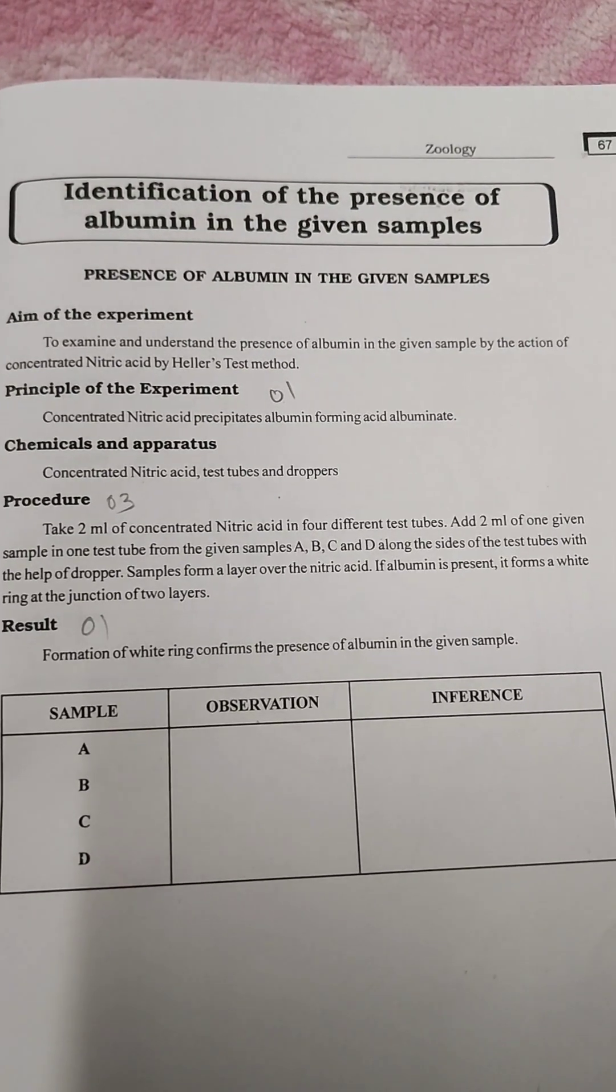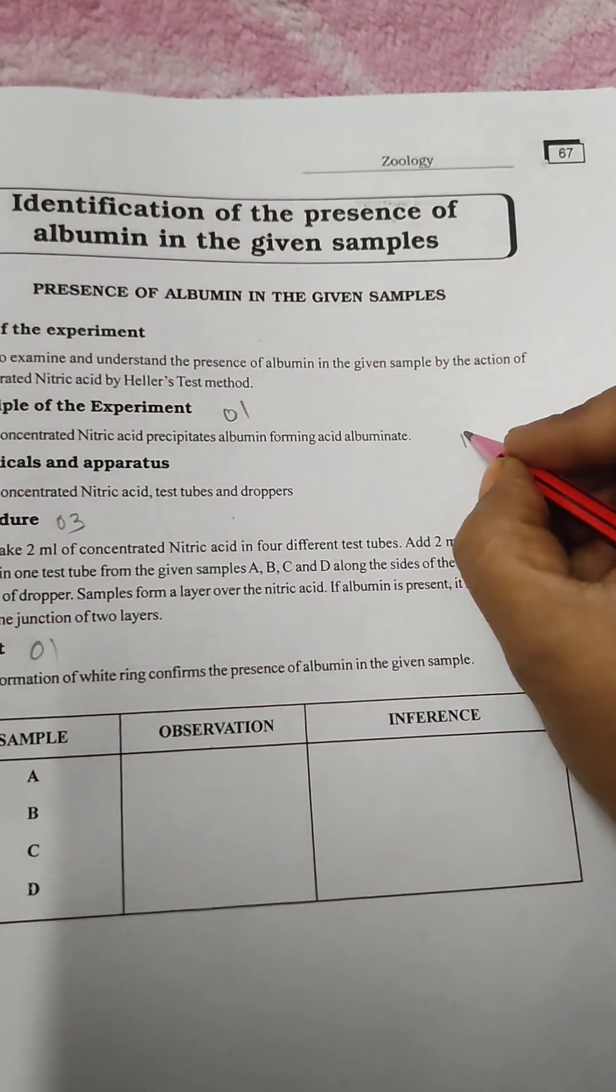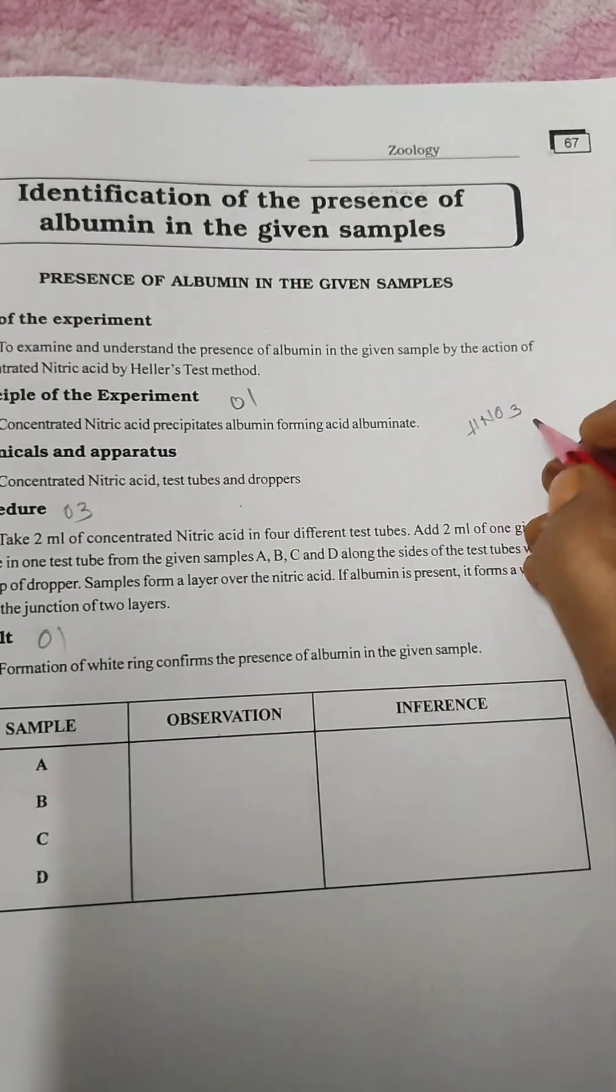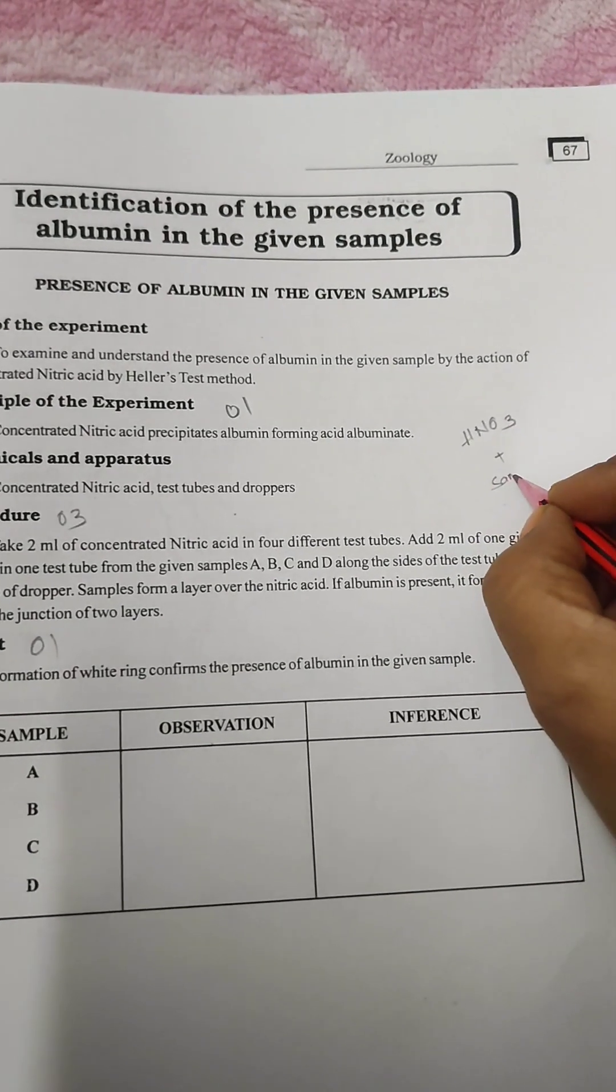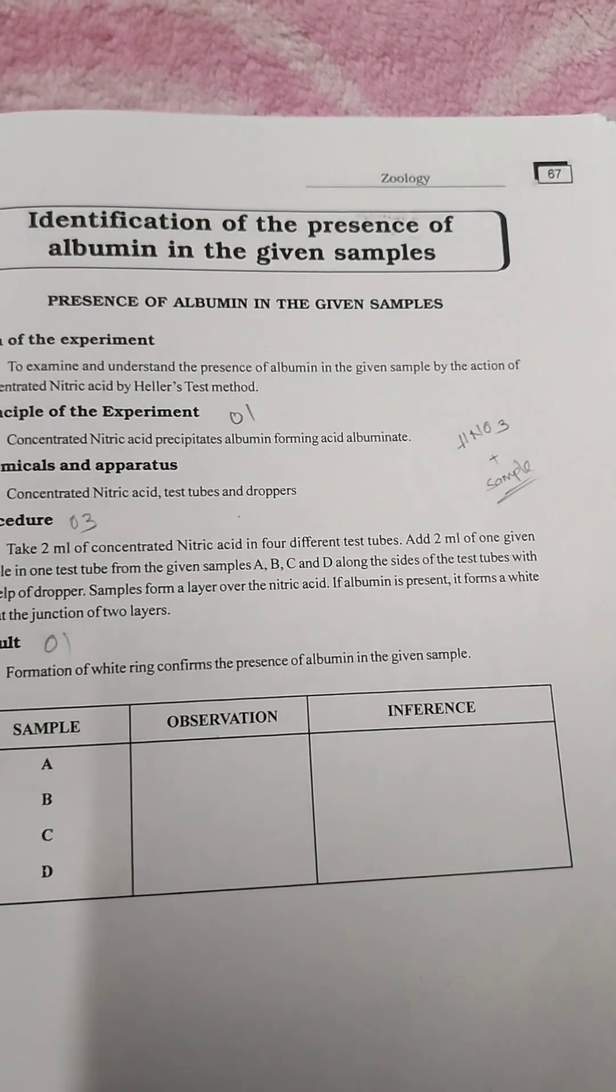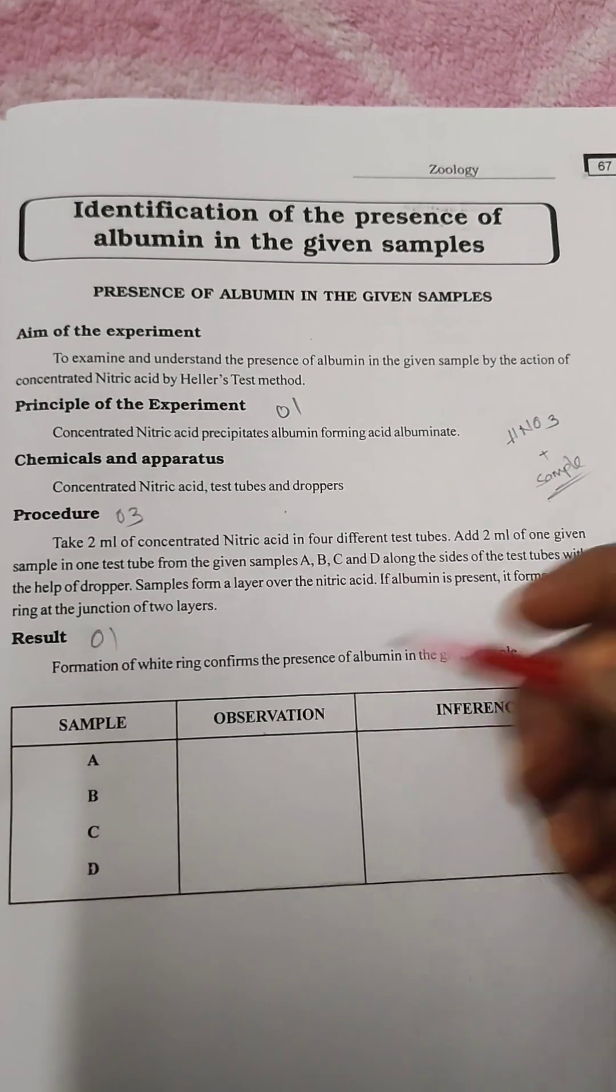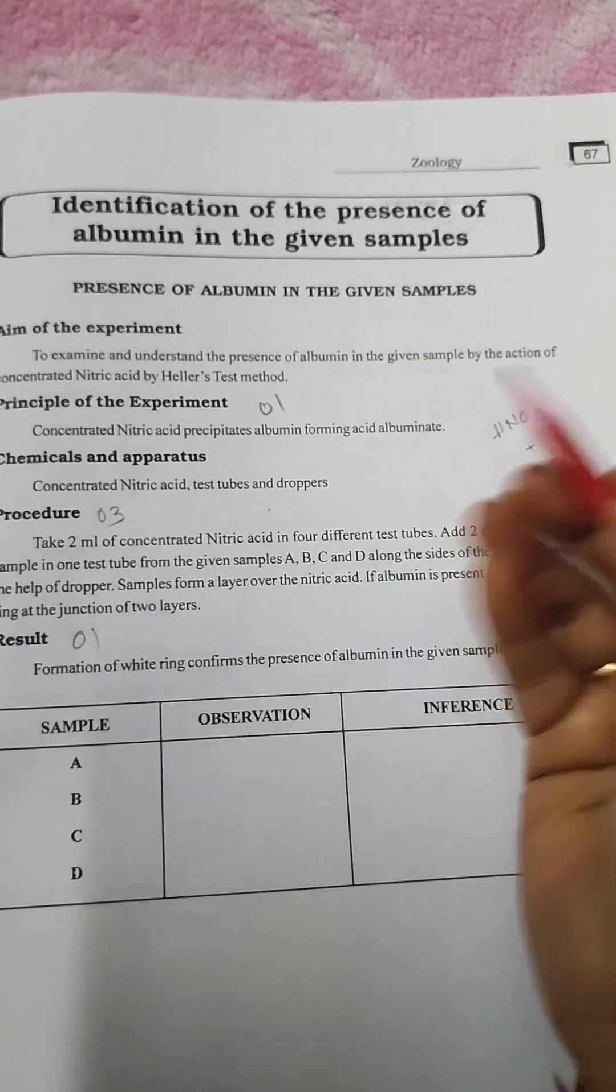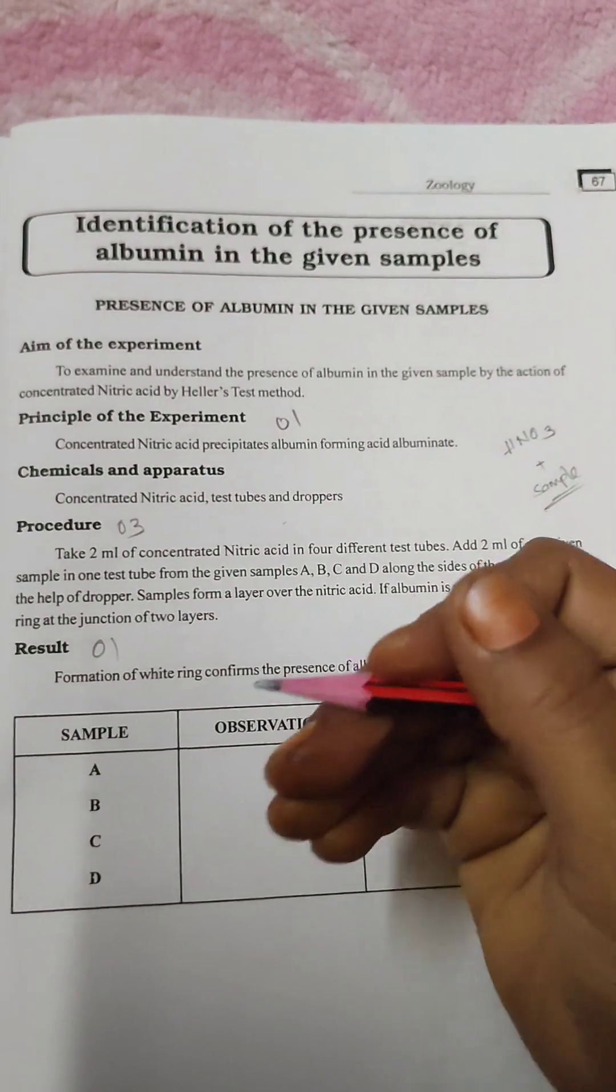Then what is the principle? Here we are utilizing concentrated HNO3 plus the sample present in the beakers. The apparatus are nitric acid, test tube and droppers. Then come to the procedure.